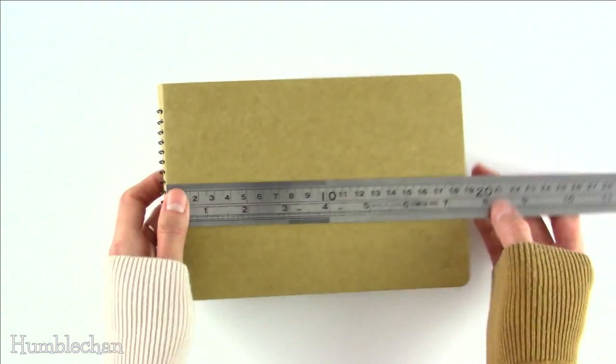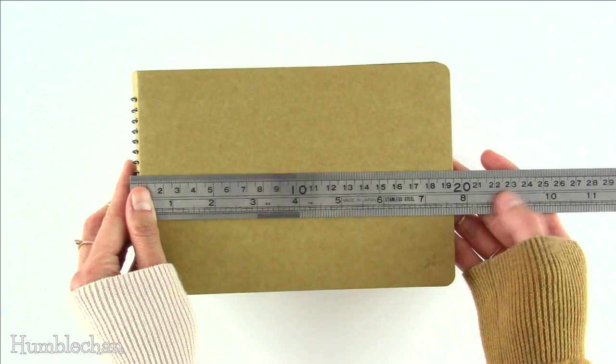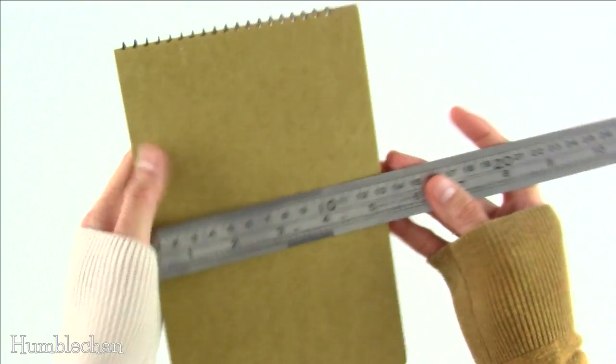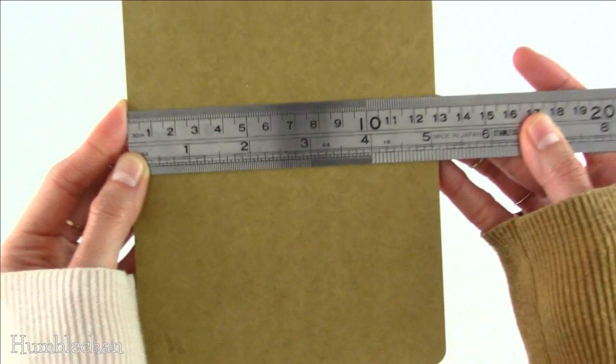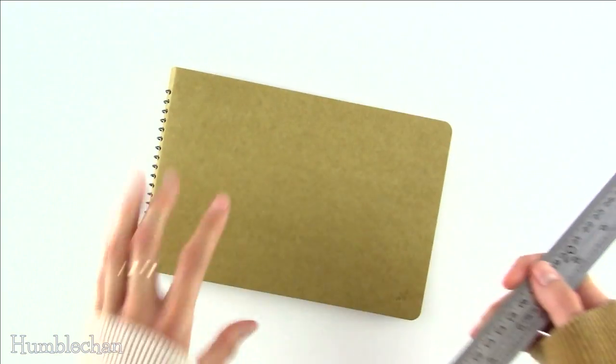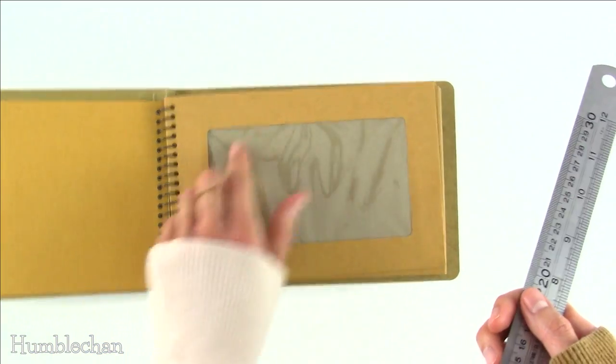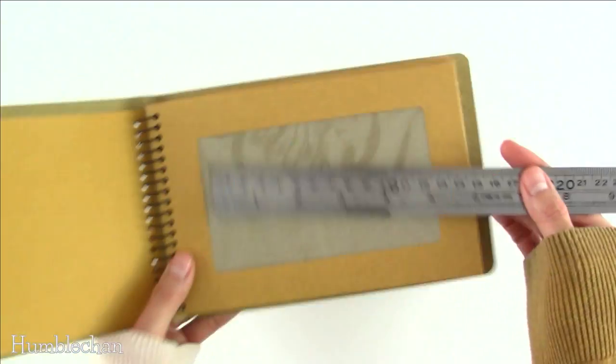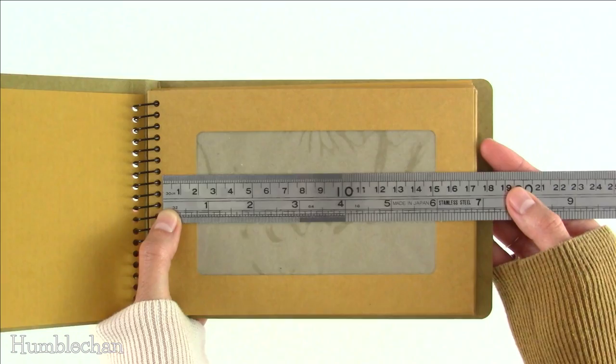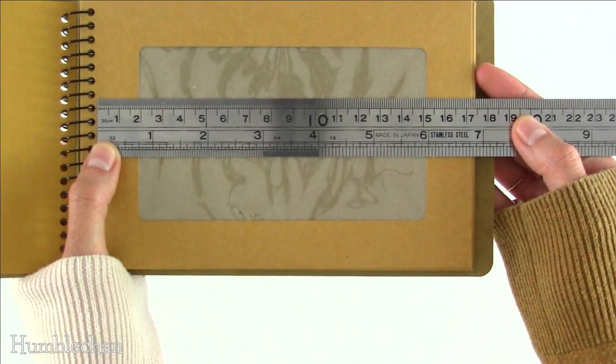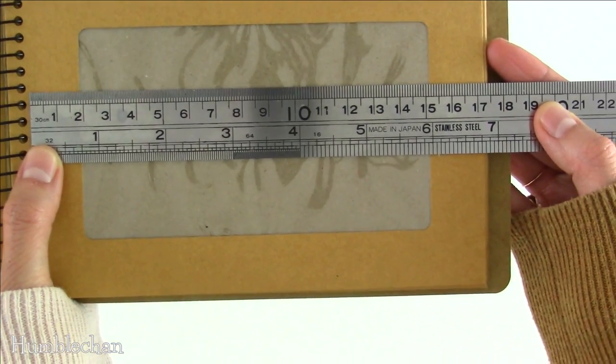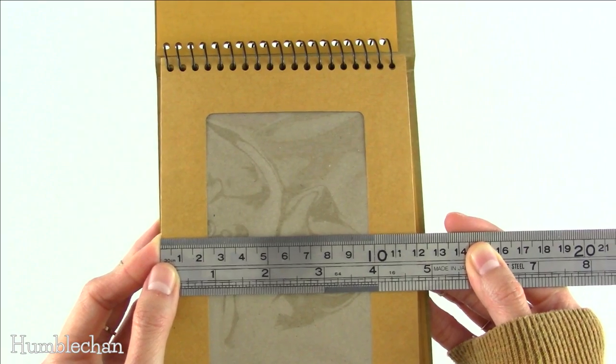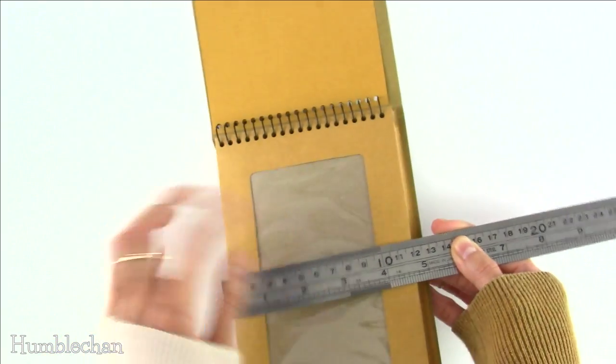I'm just going to do some quick measuring for you guys now. From the edge of the spiral binding to the edge of the cover here, it's a little bit under 7 and 3 quarters of an inch, and then the height of the cover is 5 and 1 eighths of an inch. Inside there are 12 envelopes with a plastic window and a flap. The usable dimensions are roughly 6 and 3 quarters of an inch, and the height of the envelope is just a little bit under 4 and 3 quarters of an inch.